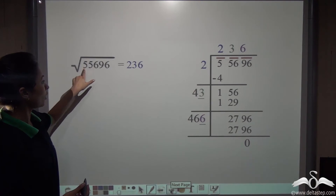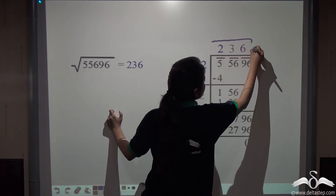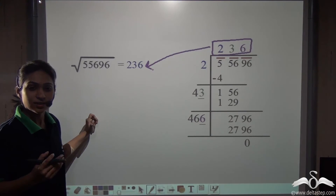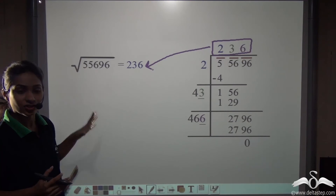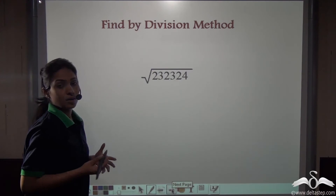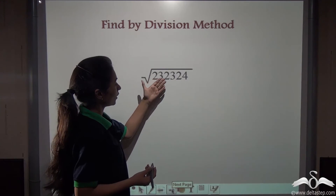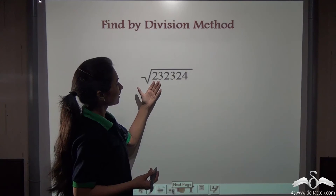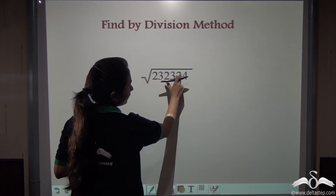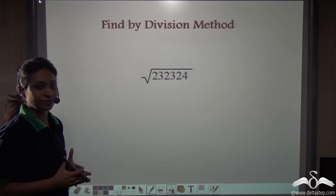So we can say that the square root of 55696 is 236. This is how we find the square root of a large number using the long division method. Now try it yourself: find the square root of 232324. You can see it has an even number of digits, so pairing them up will give a pair for each group — so it should be straightforward.